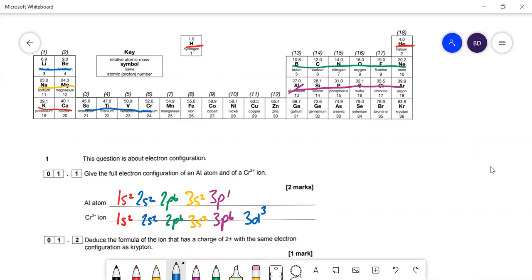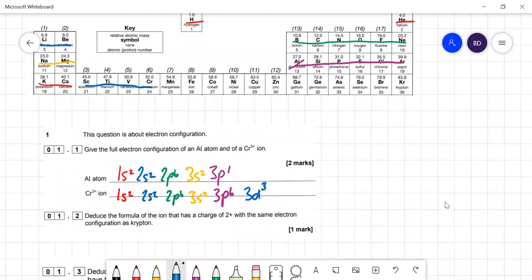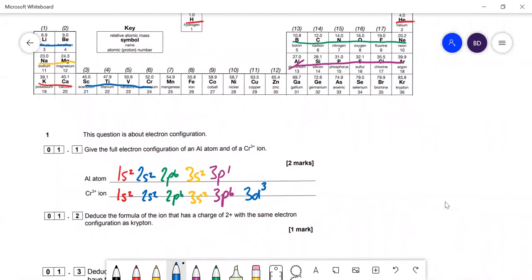Question 1.2: the ion that has a 2+ charge with the same electron configuration as krypton. The ion must have two more protons, so it's strontium, Sr2+ in group two.